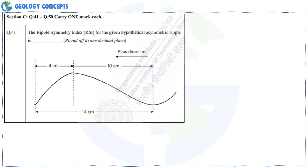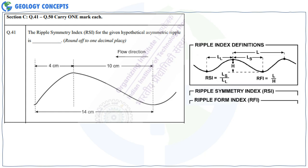Question 41: The ripple symmetry index (RSI) for the given hypothetical asymmetric ripple, rounded to one decimal place. RSI is the length of the stoss side divided by the length of the lee side. Since flow direction is towards the left, this is the stoss side and that is the lee side. RSI = 10 divided by 4 = 2.5.